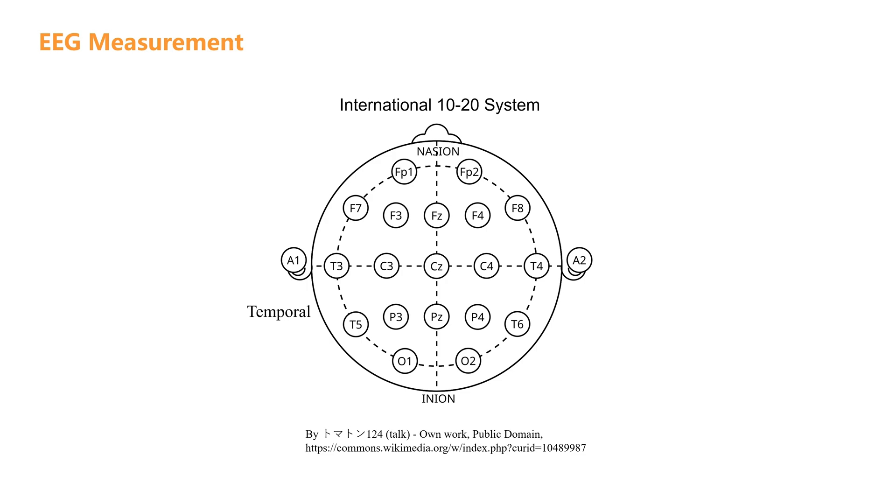The letters represent different brain regions. FP stands for frontal pole, F for frontal, T for temporal, C for central, P for parietal, and O for occipital.